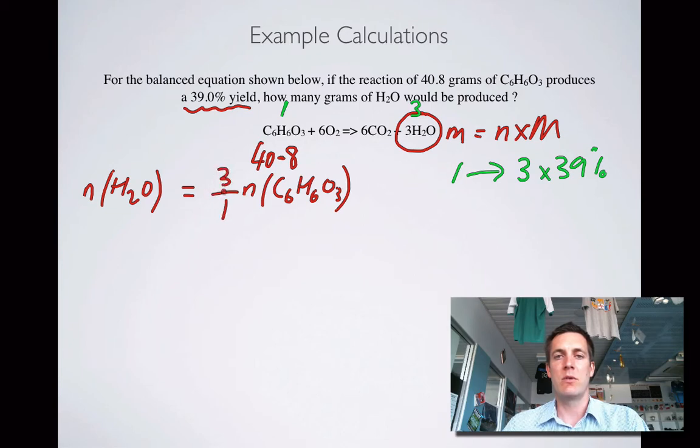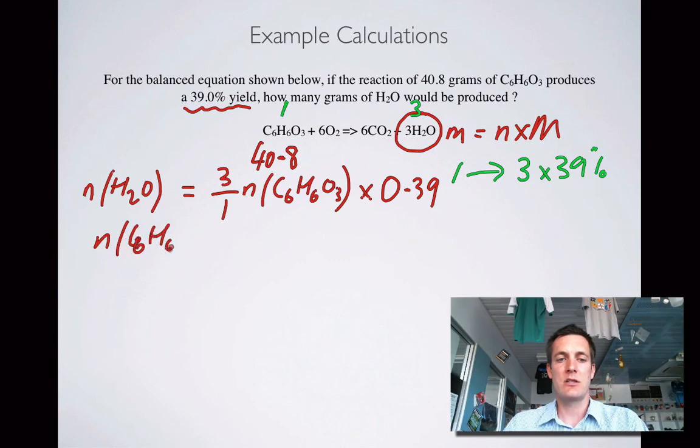If we've gone the other way then the number of moles of water would have been less than that, but not only is it three times greater than that, it's going to be 39% of that number, so times 0.39.